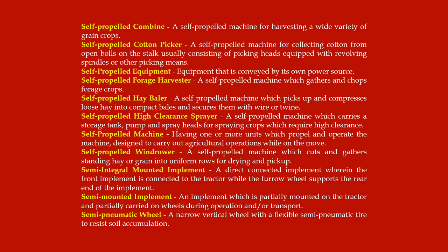Self-propelled hay baler: a self-propelled machine which picks up and compresses loose hay into compact bales and secures them with wire or twine. Self-propelled high-clearance sprayer: a self-propelled machine which carries a storage tank, pump, and spray heads for spraying crops which require high clearance.